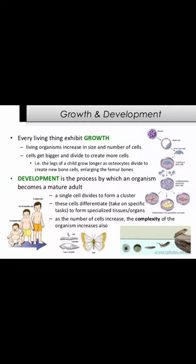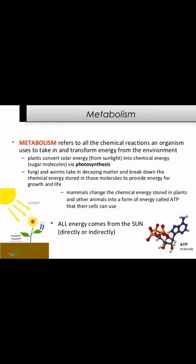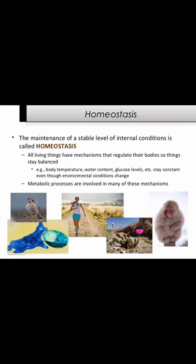As the number of cells increases, the complexity of the organism increases. Metabolism refers to all the chemical reactions an organism uses to take in and transform energy from the environment. Plants convert solar energy from sunlight into chemical energy — sugar molecules — via photosynthesis. Fungi and worms take in decaying matter and break down the chemical energy stored in those molecules to provide energy for growth and life. Mammals change the chemical energy stored in plants and other animals' cells into ATP, a form of energy their cells can use. All energy comes from the sun, directly or indirectly.